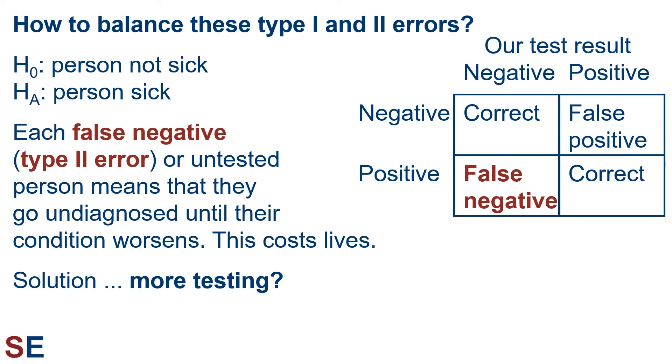What that means is that if we test a large number of people for a rare condition, most of the positive test results will be people who are not sick, and that can be a serious problem. Even if we have a very good diagnostic test, if we test for rare conditions, most of the positive test results are type 1 errors. The challenge is then how to balance these type 1 and type 2 errors. If we don't test people, we'll miss serious conditions. But even when we do test people, we get false negatives. This costs lives.